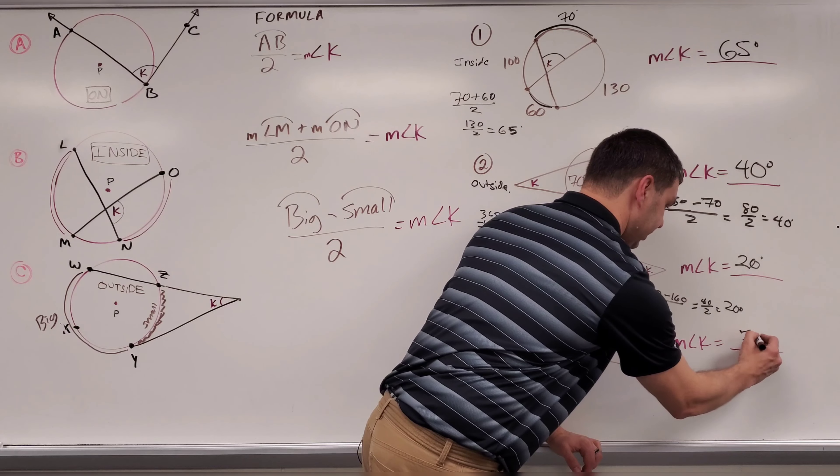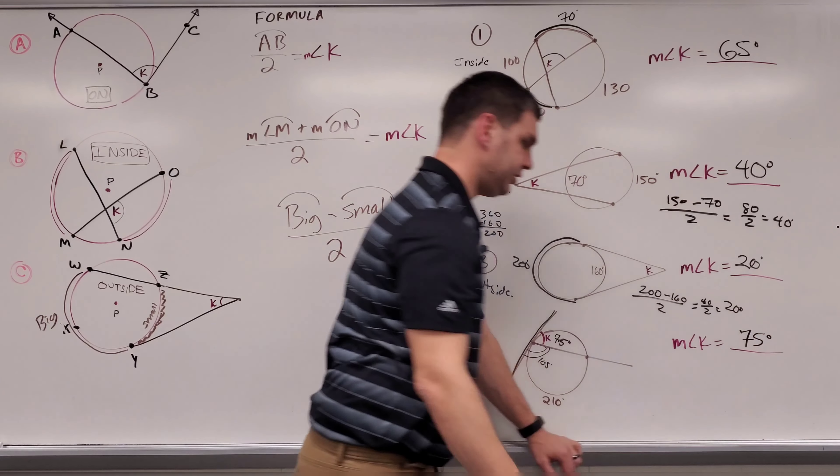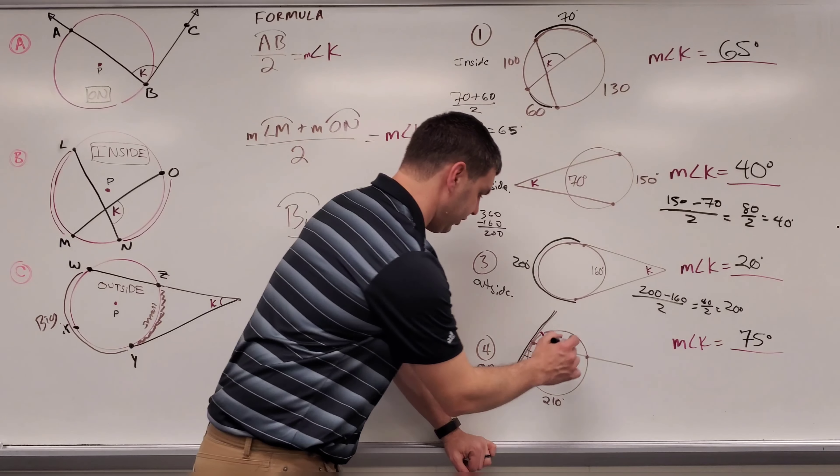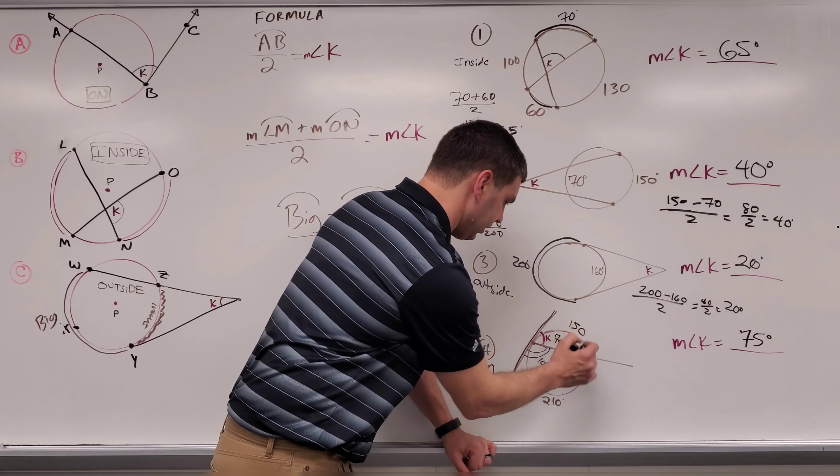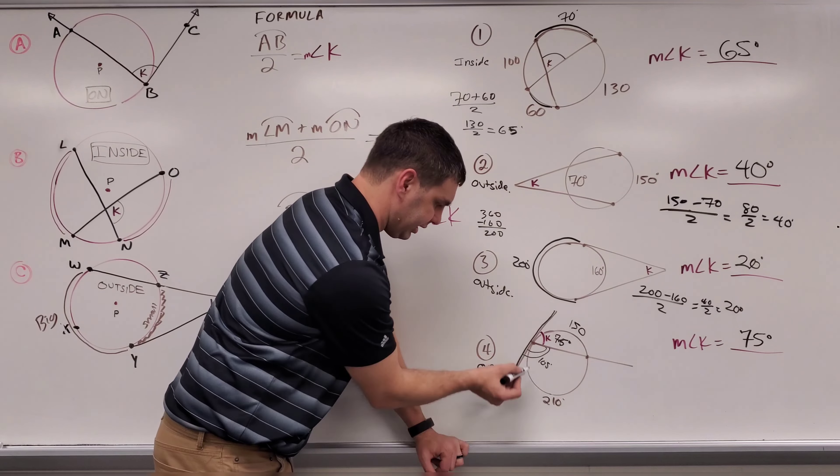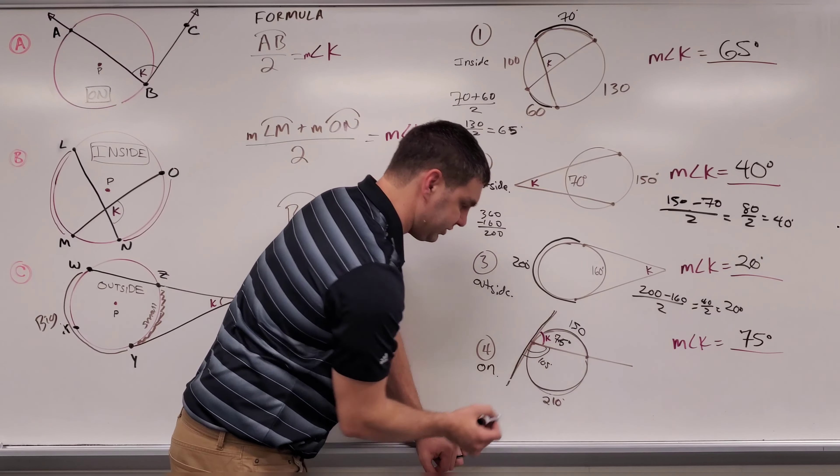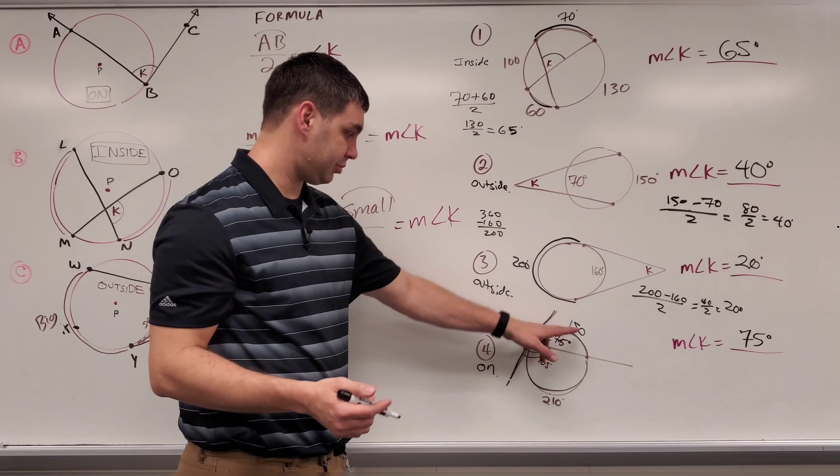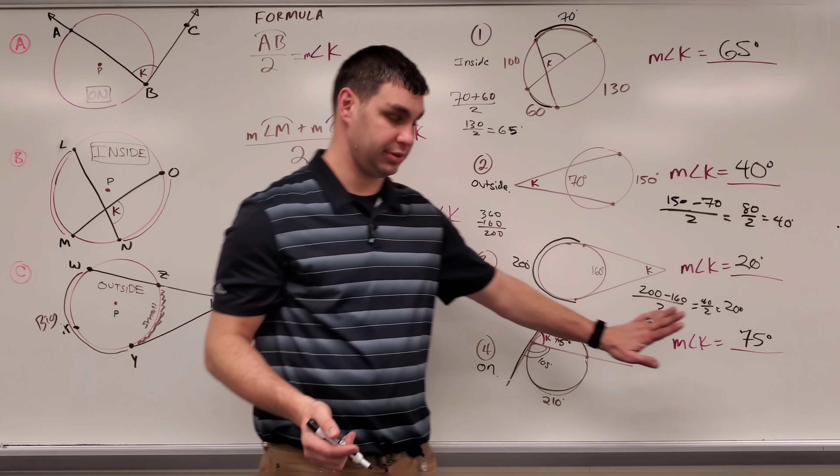So over here, I'll say angle K is 75 degrees. And just to double check that 75 times two is going to be 150. And so to double check, I can do that by taking, is this 210 plus 150? Does that get me back to be 360? Yes, it does. 210 plus 150 is 360. So therefore this works.